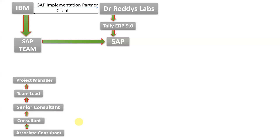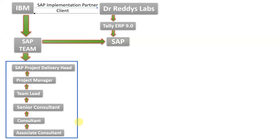Next is manager, then SAP project delivery head. All these levels come under the SAP team. The hierarchy in the SAP team goes from associate consultant, consultant, senior consultant, team lead, manager, SAP project delivery head, SAP country head, and SAP global head — these are the different levels in the SAP team. The complete team will work for Dr. Redis and design the SAP application according to their requirement.